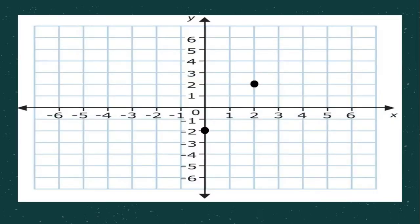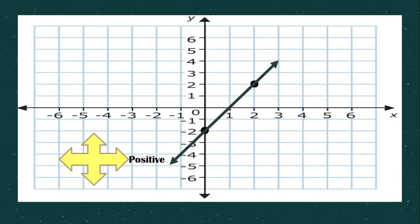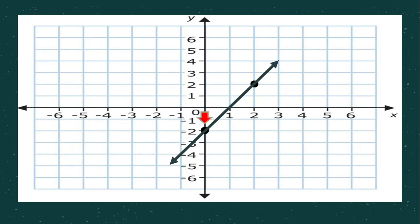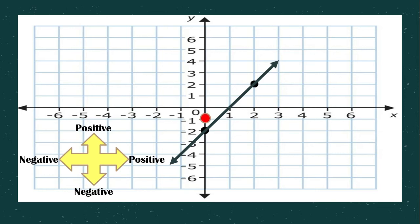Now let us define the slope using the graph. In a Cartesian plane, you can plot two points to make a line. The graph of a linear equation is a straight line. Positive is on the right side, negative on the left side; positive is upward, negative is downward. When you go right and up, your answer is positive. We will start at the bottom point and count — we move one, two, three, four — meaning our rise is positive four because we go upward.